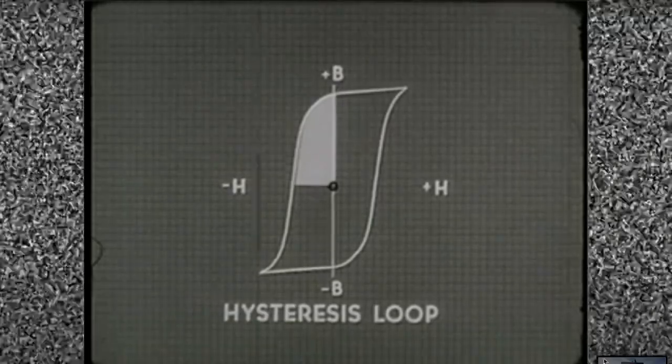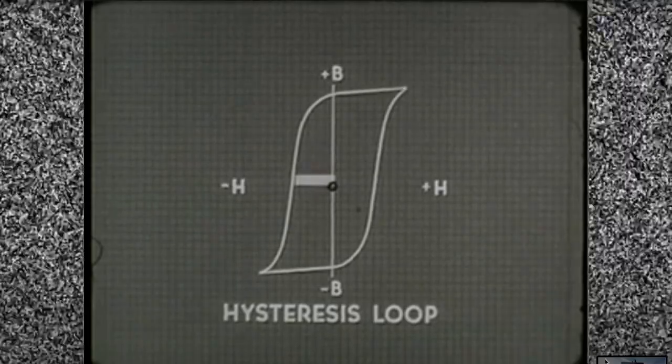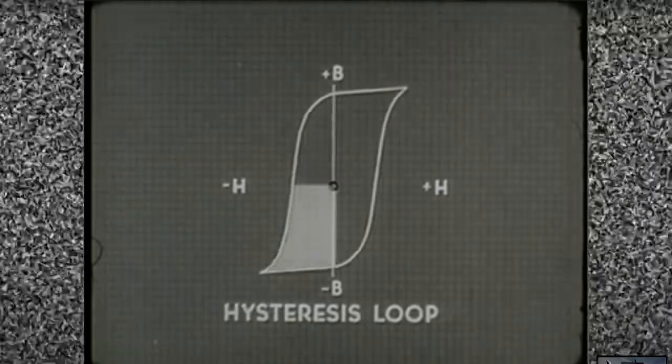If we diagrammed it, we'd see the positive residual field collapse entirely, and a negative field build up to saturation.